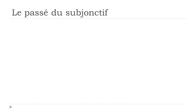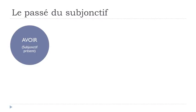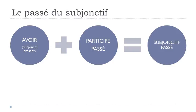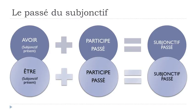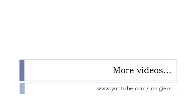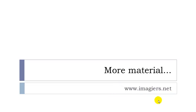To summarize: if you want to construct the passé du subjonctif, first put avoir at the subjonctif présent, then your participe passé, and you get your subjonctif passé. For all the exceptions we saw — être at the subjonctif présent, then the participe passé — and you get your subjonctif passé form. That's it for le passé du subjonctif. For more videos, visit youtube.com/imagier, and more material at www.imagier.net. Have a great day, bye-bye!